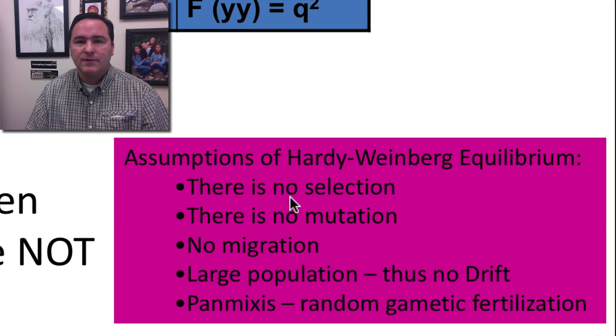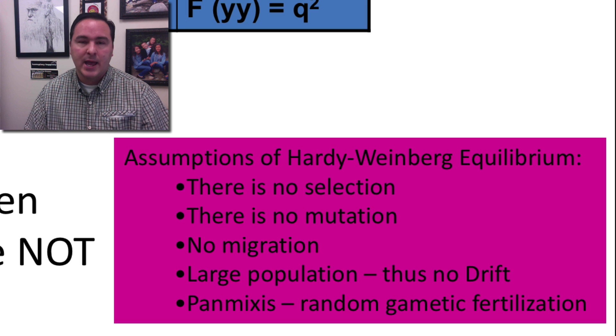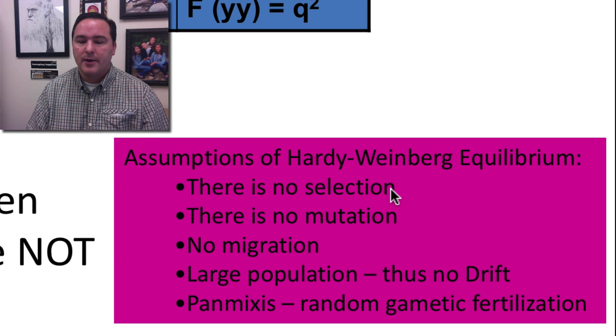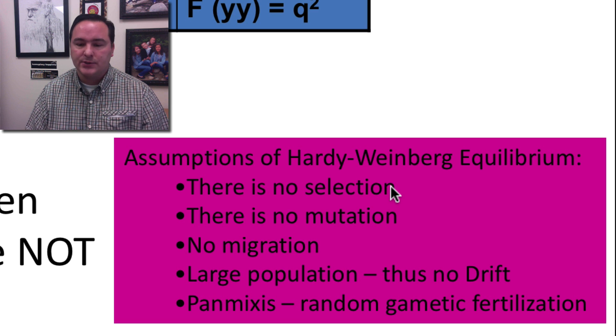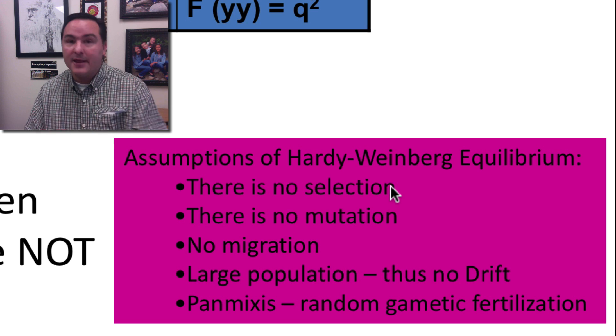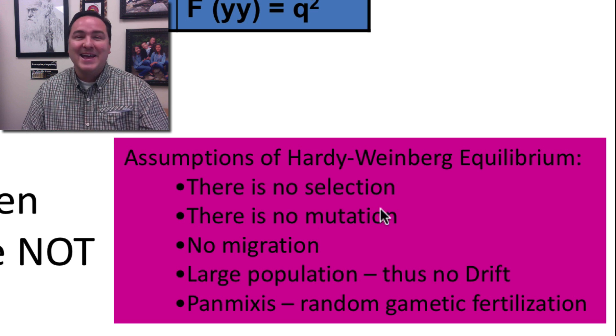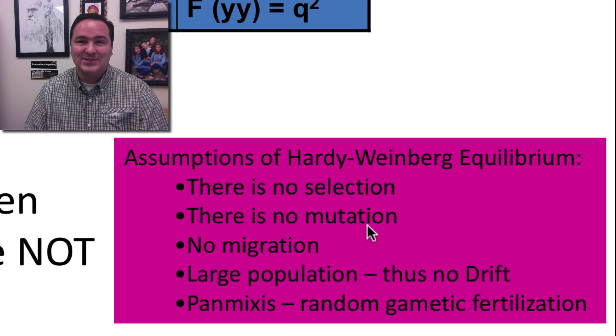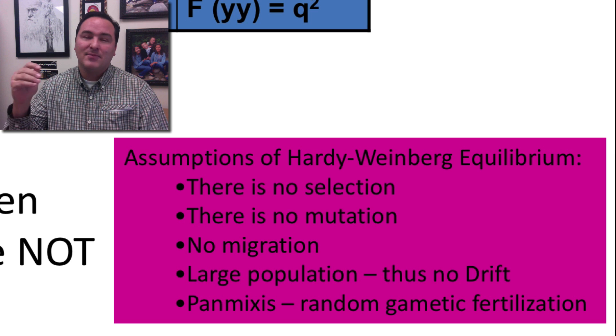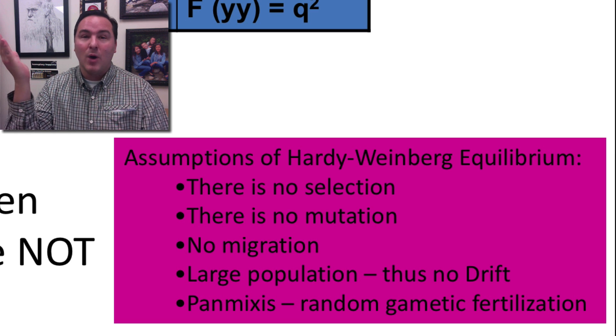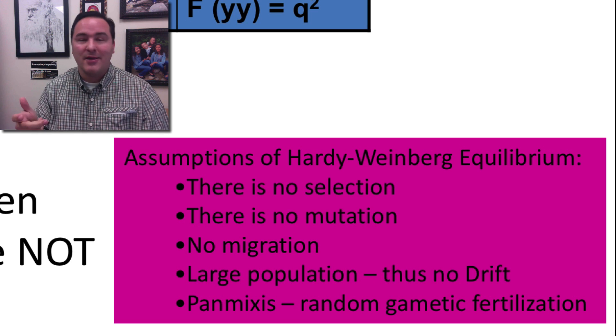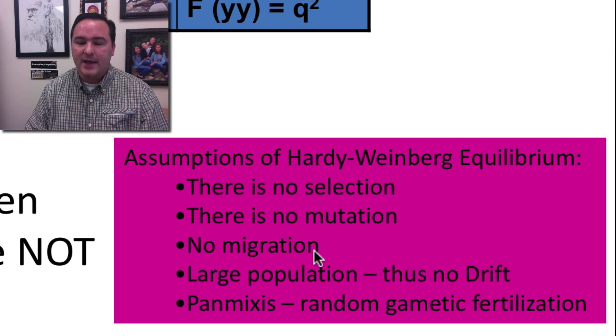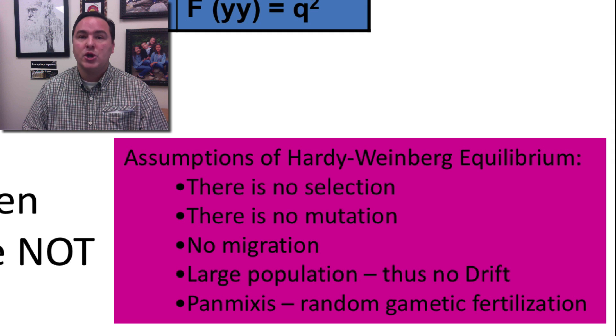So the assumptions of Hardy-Weinberg though are that there is no selection happening. So it wasn't better to be white flower colored or yellow flower colored. Remember we just talked a lot about natural selection. So we're assuming that none of that is happening in this case. We're also assuming that there is no mutation. No mutations are happening. So you're never getting something that maybe was originally a big Y but a mutation occurred and somehow that flipped it down into a little white or into some completely other color. We're assuming none of that is happening.